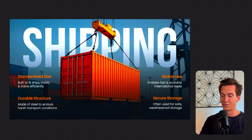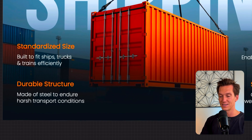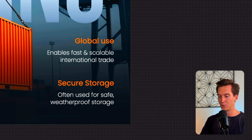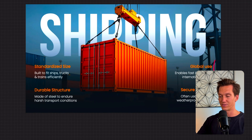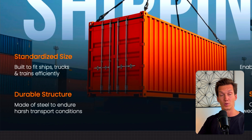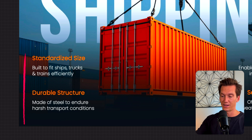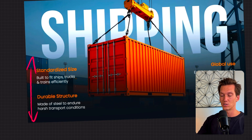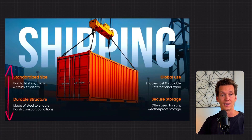Then we have those four blocks: standardized size, durable structure, global use, and secure storage — all aligned to the side. We have these two aligned to the right and two aligned to the left, on the same height, so we have that nice balance and split on the slide. To make it readable when working with those images, I've added a little bit of a gradient behind the text so it really stands out and gets the full attention that it deserves.